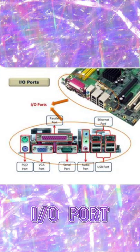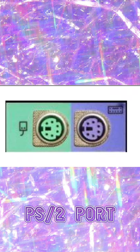I/O ports. This is located in the rear panel of the CPU. This is used to connect the outside hardware or peripherals of the computer. PS2 port: these are used to connect the mouse (green color) and the keyboard (purple color).